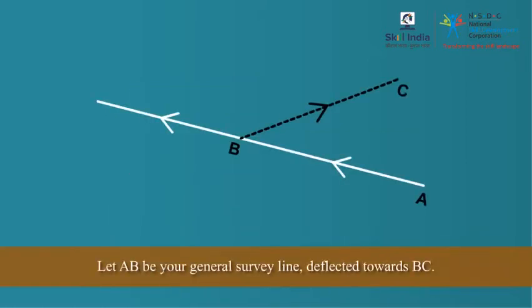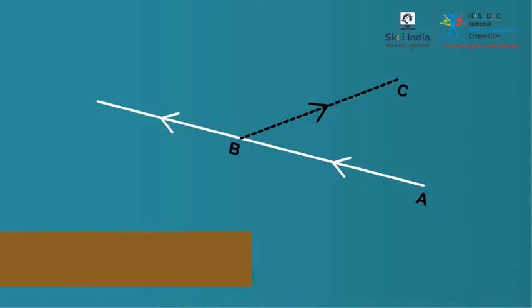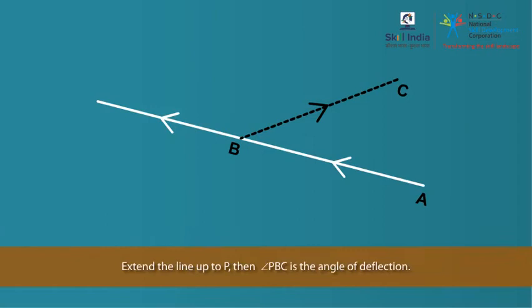Let us say AB is your general survey line which is deflected towards BC. With AB extended up to P, the angle PBC is termed as the angle of deflection.